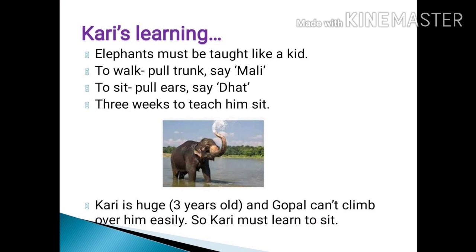The narrator wanted Kari to learn, just like children going to school. First, Kari should be taught to understand the signal to walk forward. The word is Mali, which means walk forward. It took just three classes for Kari to learn this. Gopal would hold Kari's trunk, pull it, and say 'Mali,' and Kari would understand he should walk. But the next thing — teaching Kari to sit — was very difficult and took nearly three weeks.